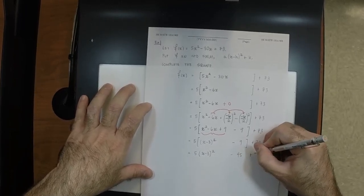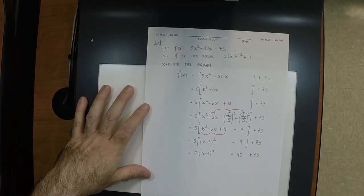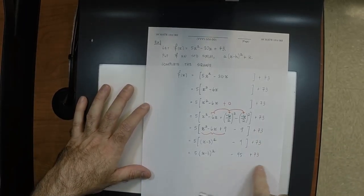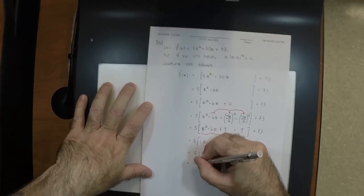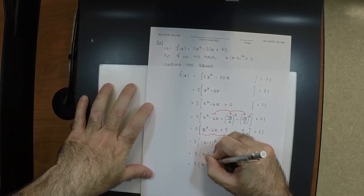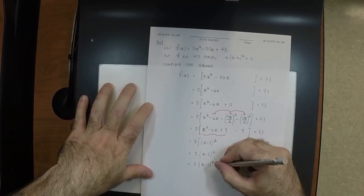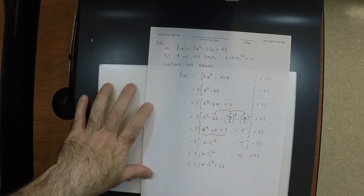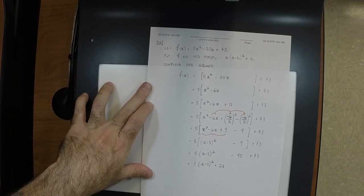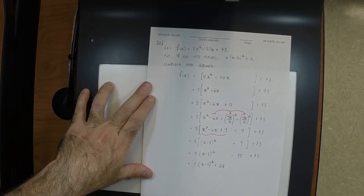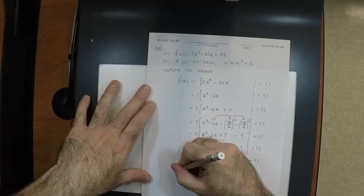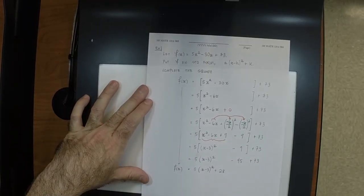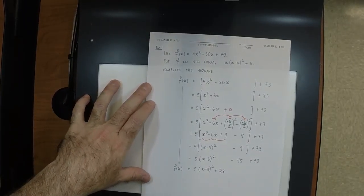Now we distribute the 5 into the square brackets: 5(x minus 3)² minus 45 plus 73. Combining: minus 45 plus 73 is 28. So f(x) equals 5(x minus 3)² plus 28. Have we satisfied the objective? Yes — it's in standard form.